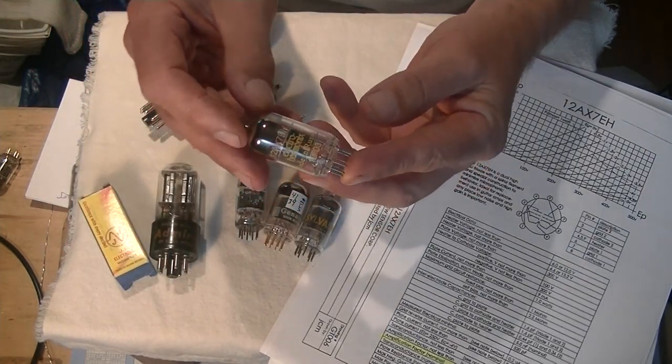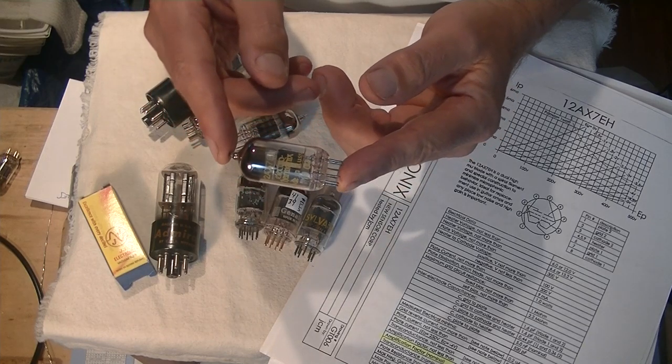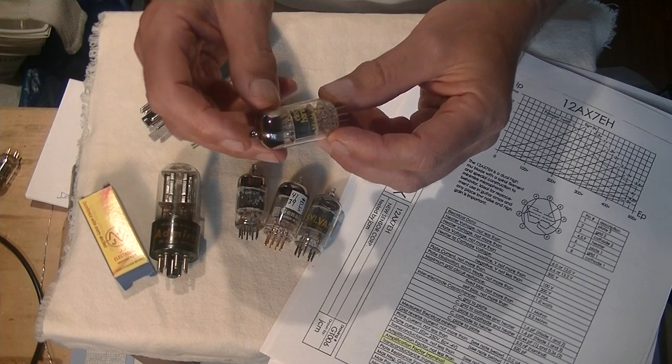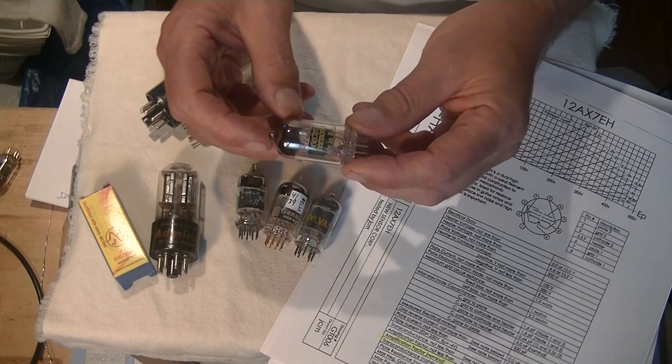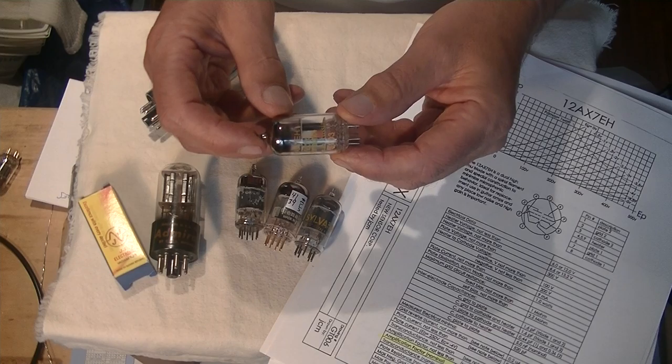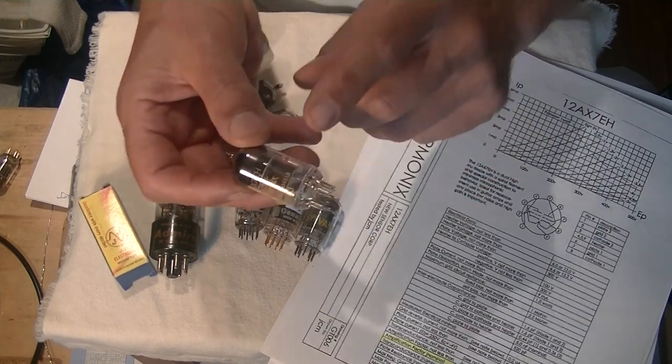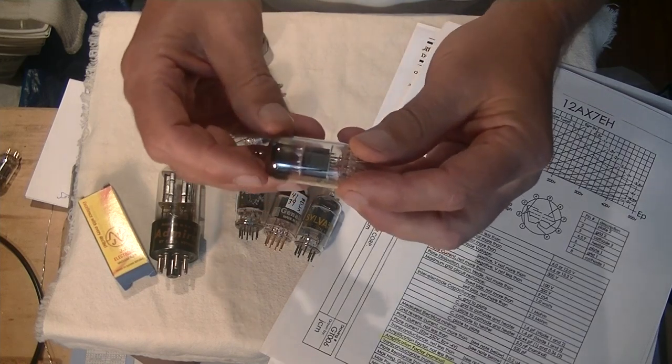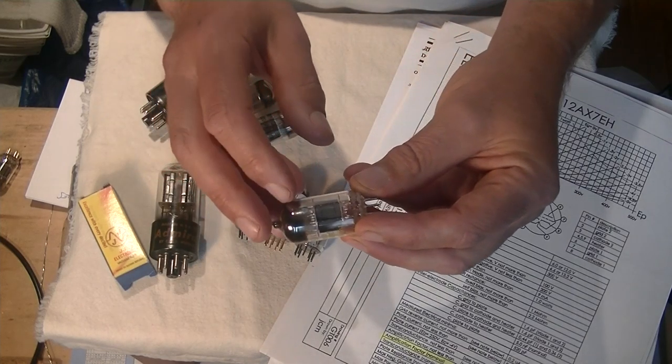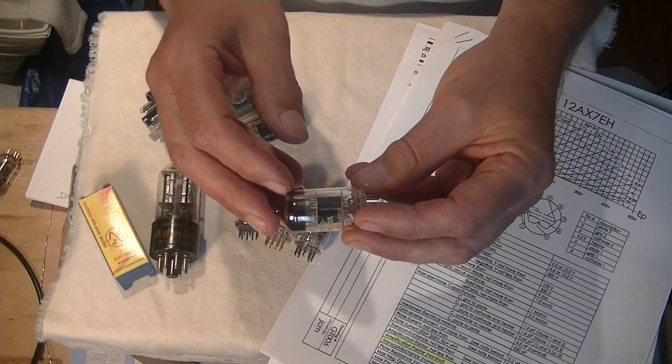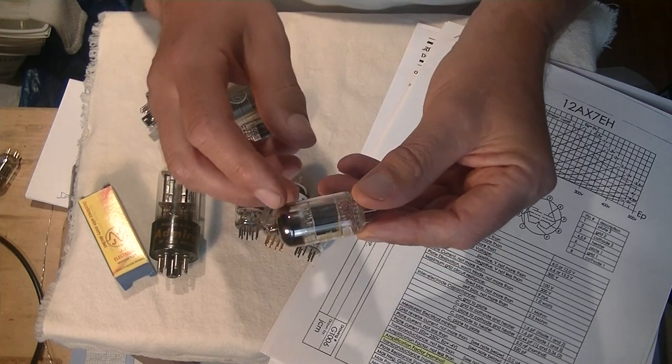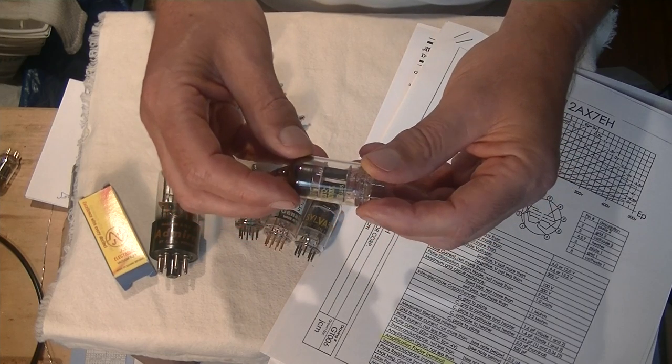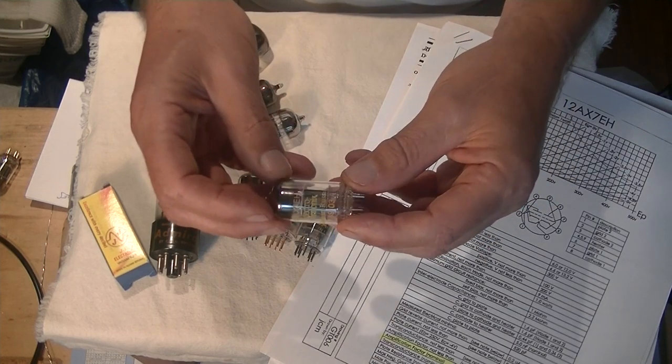Here's a 12AX7. It's probably the most common small signal tube made today. It's a relatively new tube in the history of vacuum tubes. We've got a glass envelope, nine pins on the bottom. Inside the glass envelope we have a vacuum, so there's no oxygen inside. Depending on the tube, there may be a type of gas inside, but basically we have a vacuum.